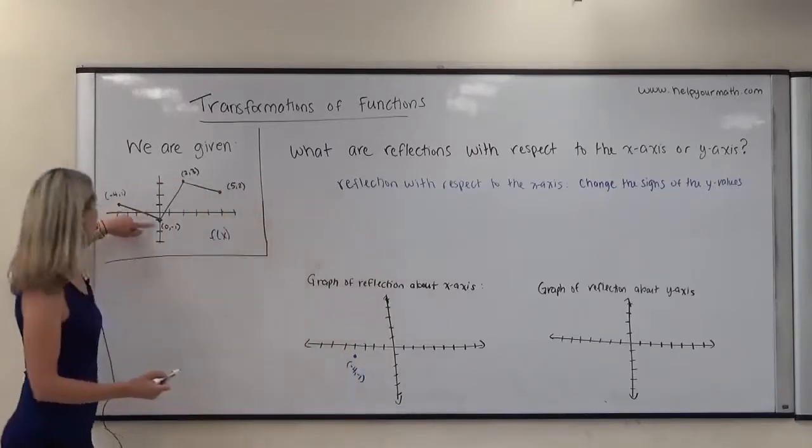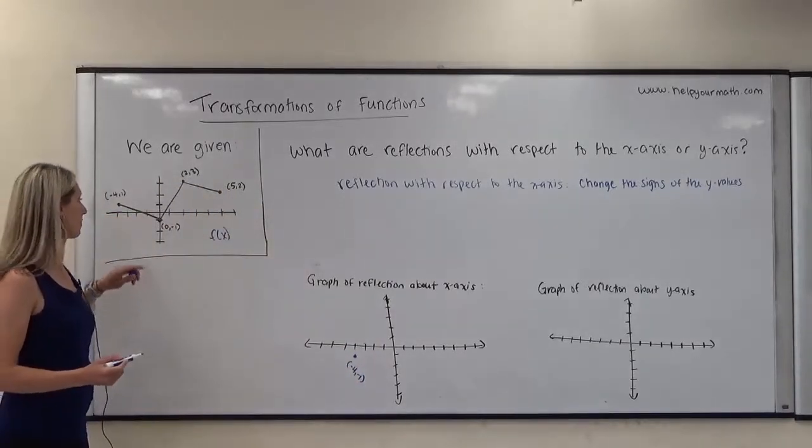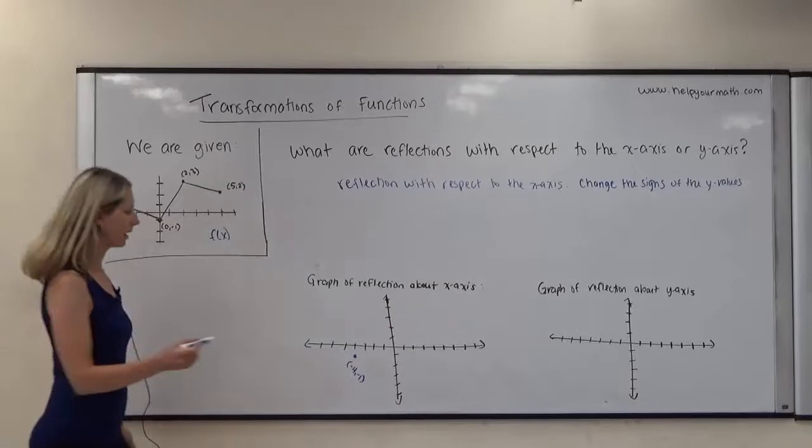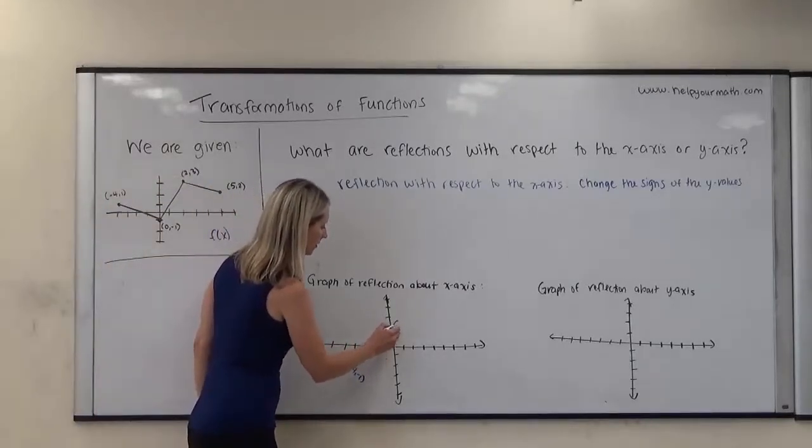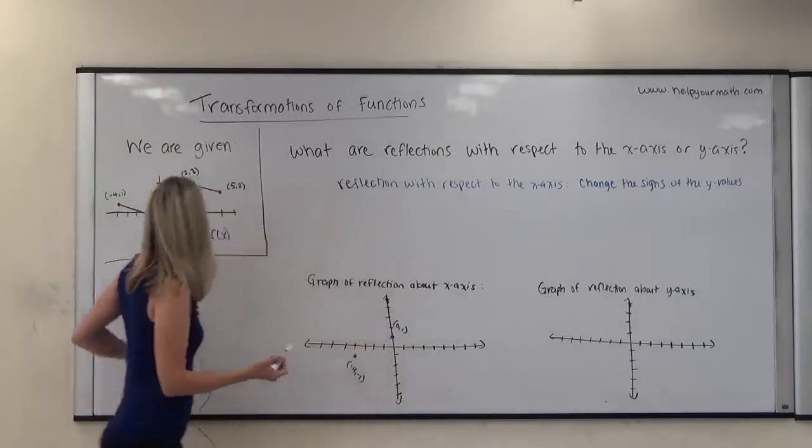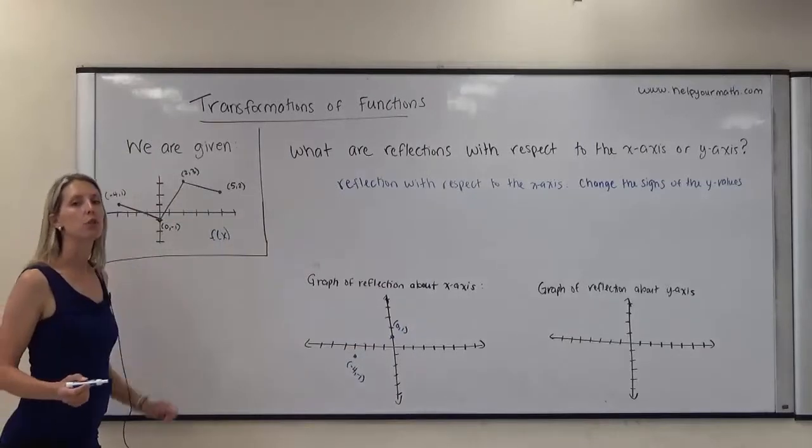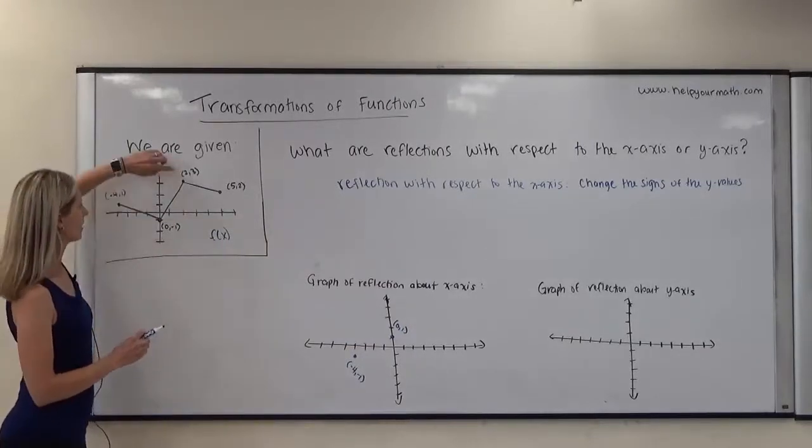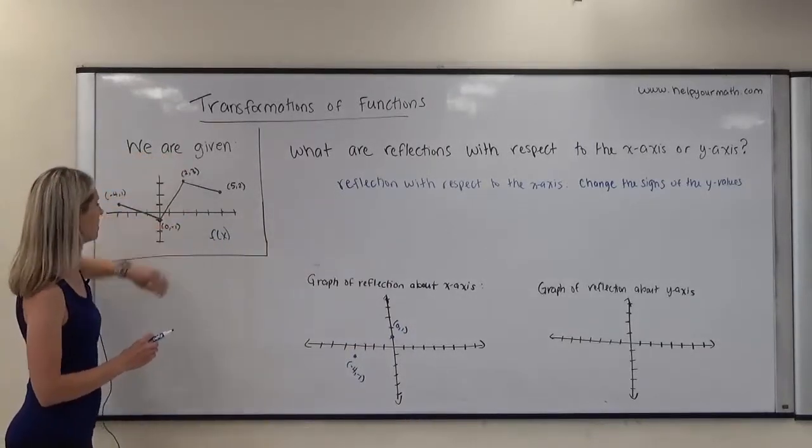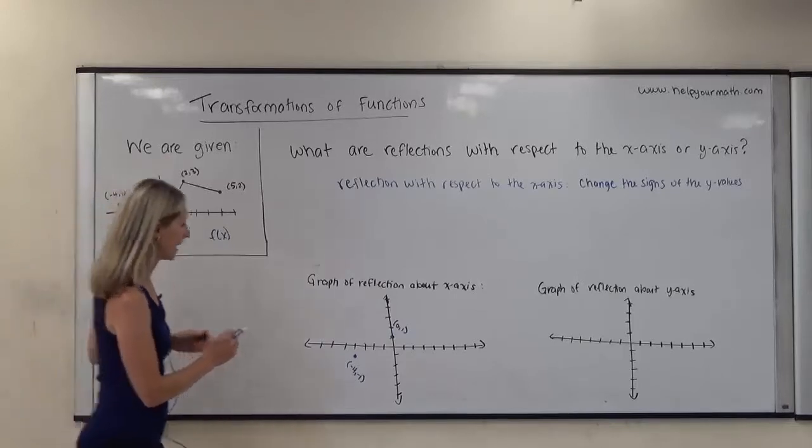Negative 4, negative 1. And then 0, negative 1, if we reflect that about the x-axis, that would become 0, 1. Then 2, 3 would become 2, negative 3, because we're taking the y-coordinates and moving them to the opposite side of the x-axis.